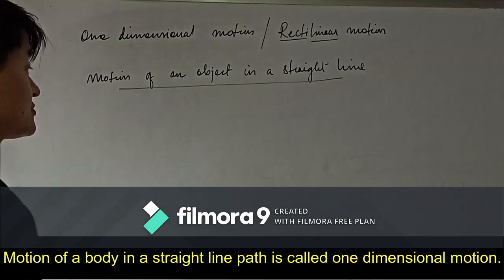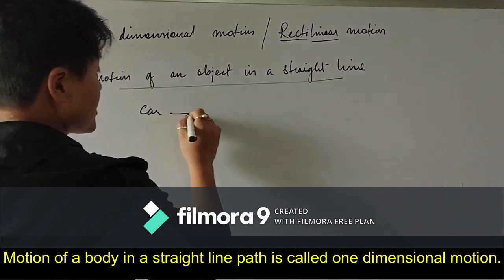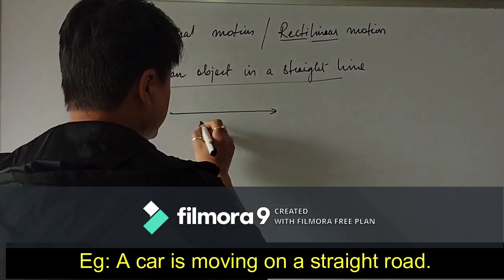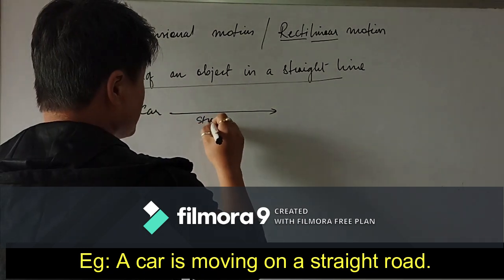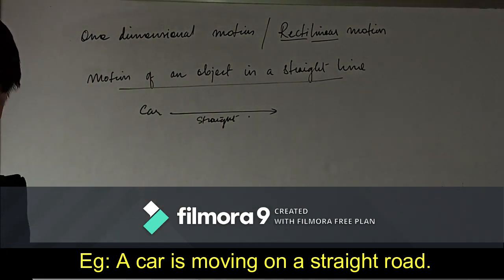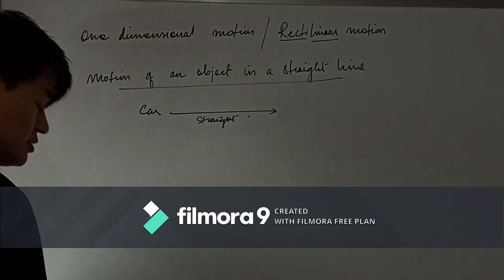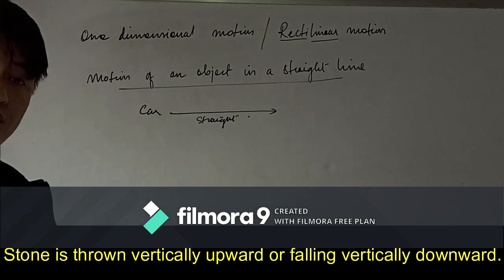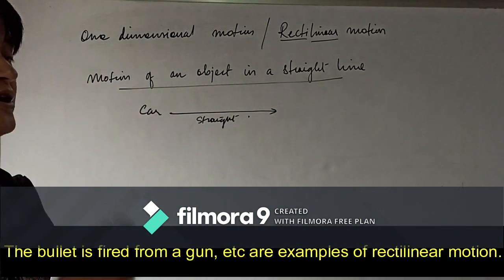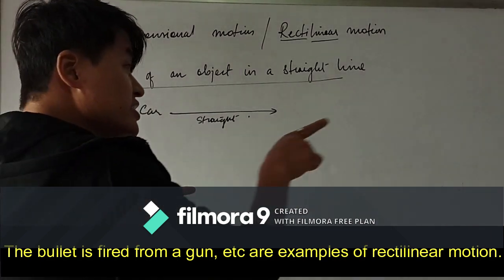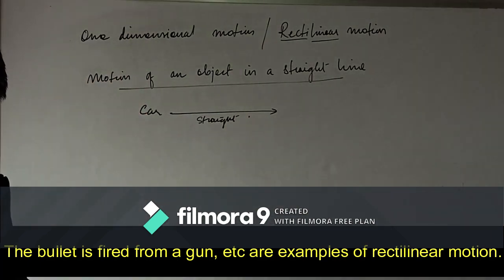For example, a car moving on a straight road is an example of rectilinear motion. A stone thrown vertically upwards travels in a straight line — that is rectilinear motion. A bullet fired from a gun also travels in a straight line and is another example of rectilinear motion.